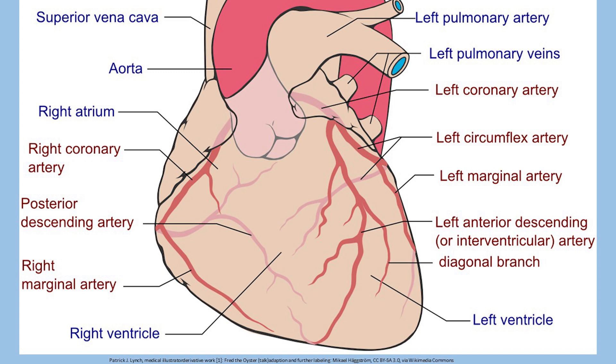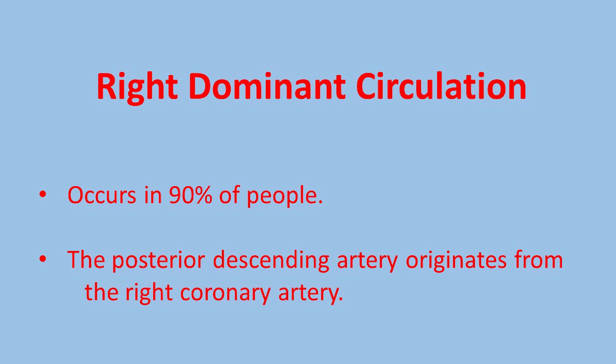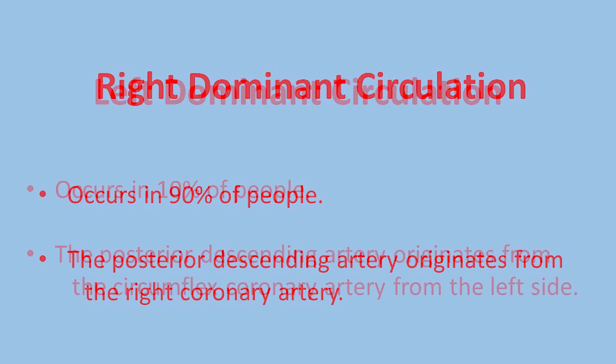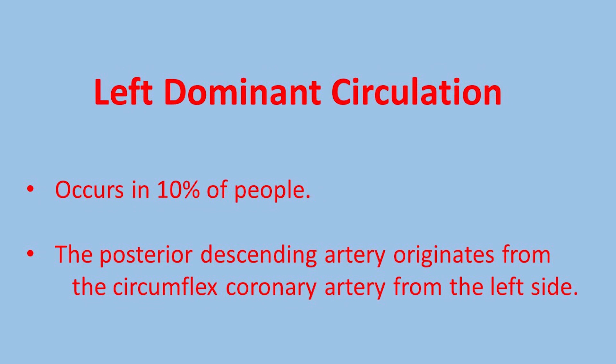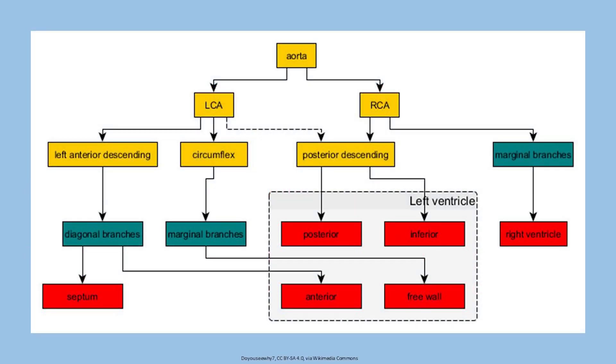This is the anatomy in 90 percent of cases, and in this situation the circulation is labeled as right dominant. In 10 percent of patients, the right coronary artery is a small artery and the circumflex artery is a large artery, and the circulation is labeled as left dominant. This diagram shows the three main arteries of the heart and their branches.